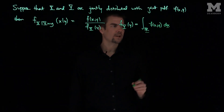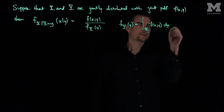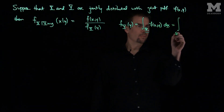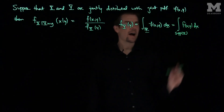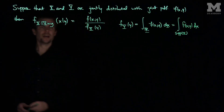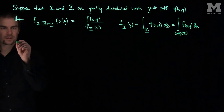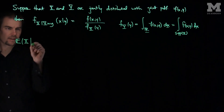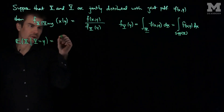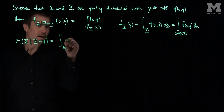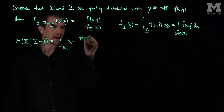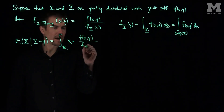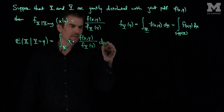So we integrate out all of the x values and we're only left with y values. We can also write this as the integral over the support of the random variable x of f dx. Now, the expected value of x given that y equals little y is by definition the integral over r of x times the conditional density function — that is, x times f of xy over fy of y, dx.